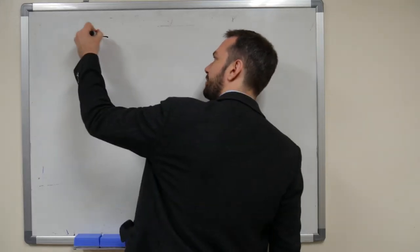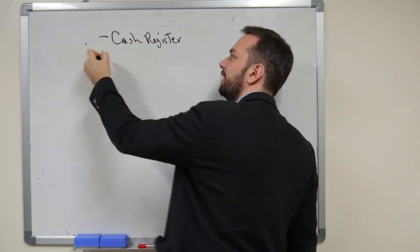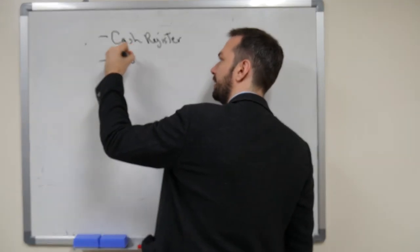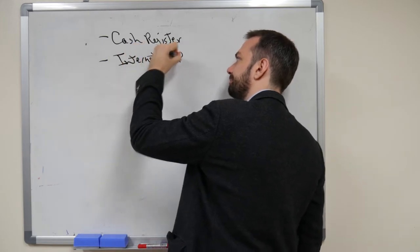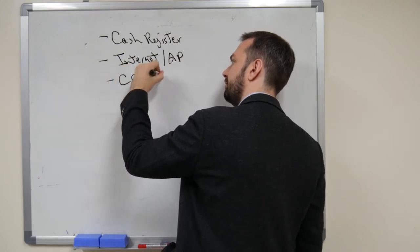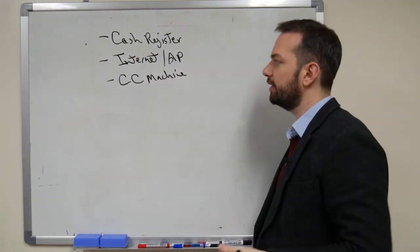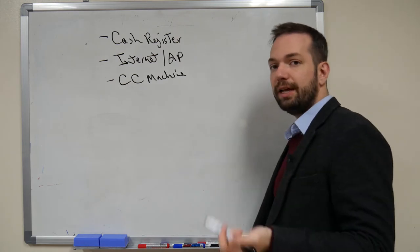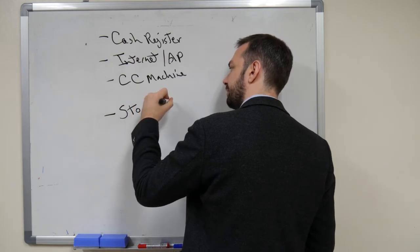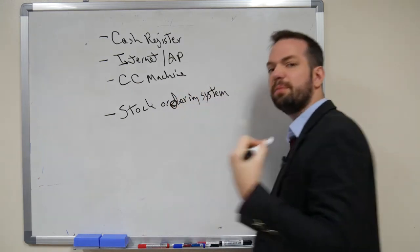We said something like a cash register. So cash register, internet, probably an access point, and then credit card machine. Cash register, internet access point, credit card machine, and then most likely some sort of stock ordering system.